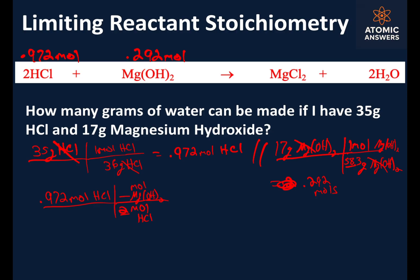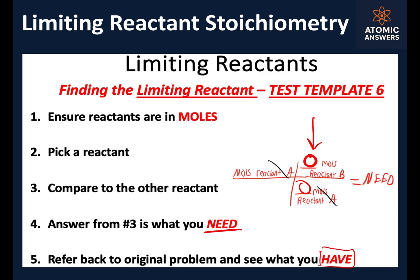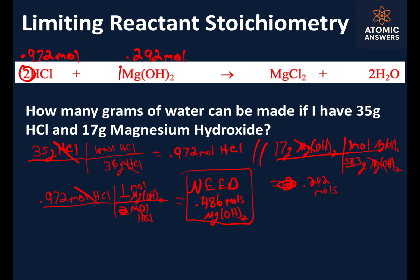We have 0.972 moles of HCl. We compare that to the other reactant: moles of HCl on the bottom, moles of Mg(OH)₂ on top. From the balanced equation, that's 2 moles of HCl and 1 mole of Mg(OH)₂, so moles of HCl cancel. That gives us 0.972 times 1 divided by 2 — meaning we need 0.486 moles of Mg(OH)₂. But the problem tells us we only have 0.292 moles.